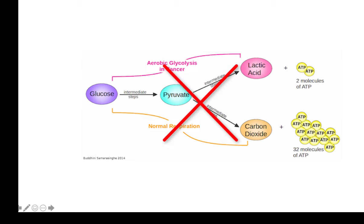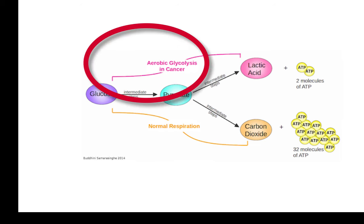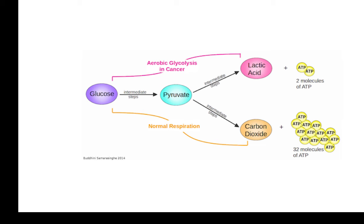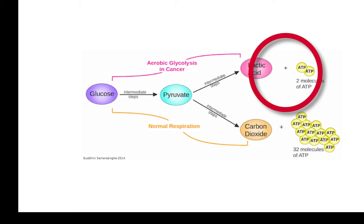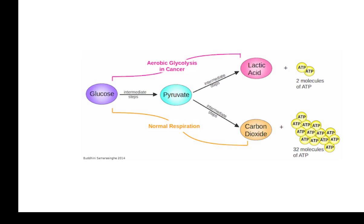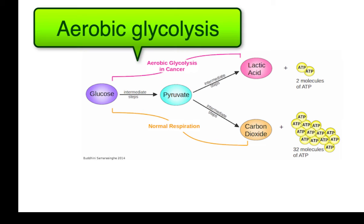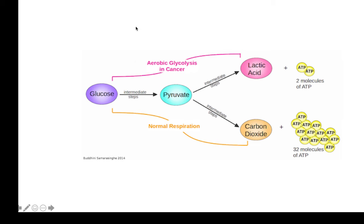Tumor cells use neither of these two pathways — they use a third way. Tumor cells convert glucose to lactic acid despite the presence of oxygen. Even though oxygen is available, glucose is converted to lactic acid, yielding only two moles of ATP per mole of glucose. This is called aerobic glycolysis — glycolysis occurring in the presence of oxygen.